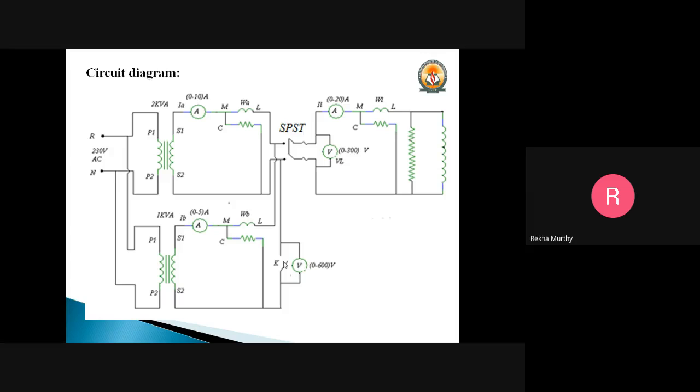And the no load reading will be noted down. The SPST switch is closed now when the voltmeter is going to read 0. The SPST switch is closed, k1 is closed, and we have to note down the no load readings.